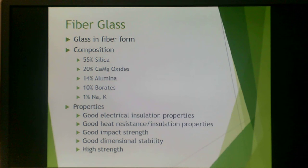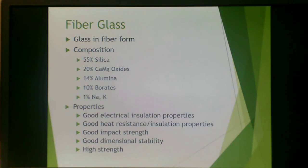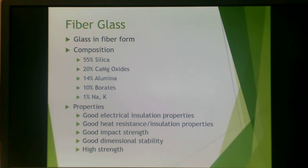Fiberglass is simply glass in fiber form. This is a silica-based glass, generally 55% silica, 20% calcium or magnesium oxides, 40% alumina, 10% borates, and then a small amount of sodium and potassium. Fiberglass can provide good electrical insulation properties, good heat resistance, good impact strength, good dimensional stability, and high strength in the resulting compound.